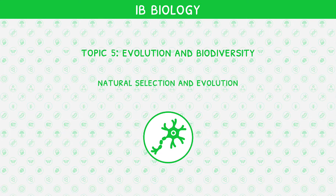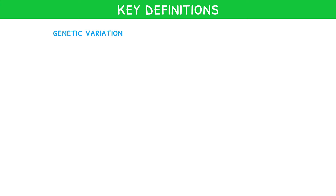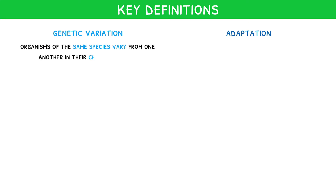To start this video, it is important to first outline two key definitions: genetic variation and adaptation. Genetic variation is the concept that organisms of the same species vary from one another in their characteristics. It is mainly caused by mutation, forming new alleles.